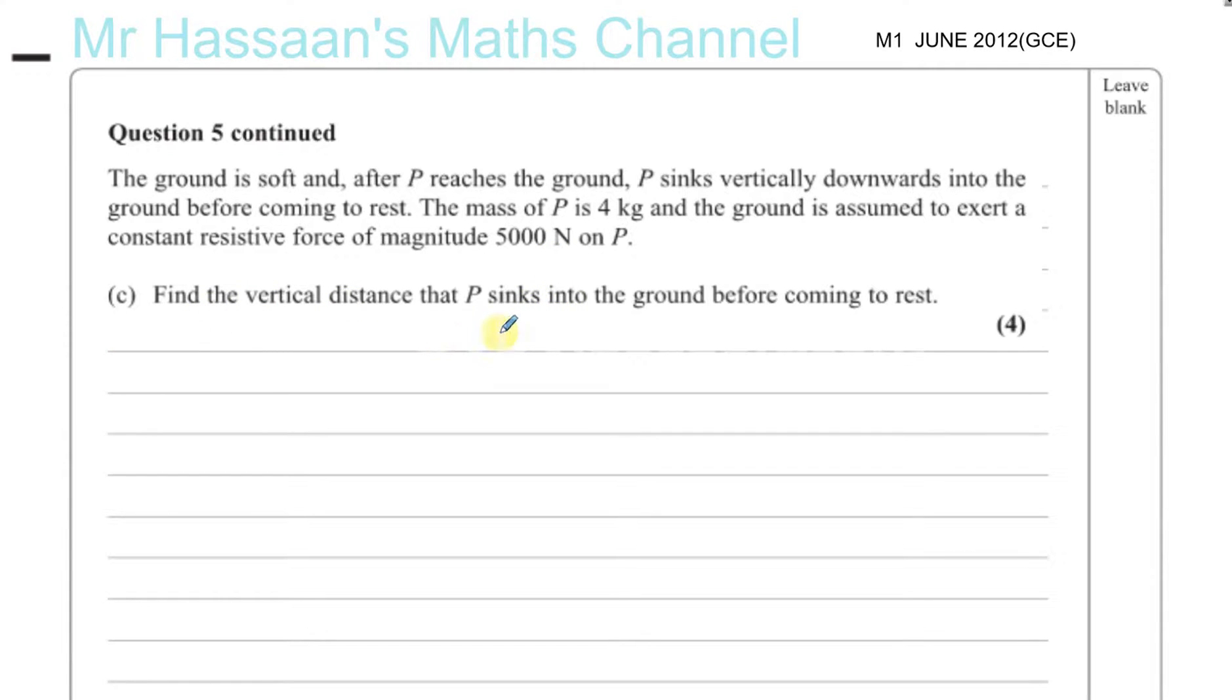Find the vertical distance that P sinks into the ground before coming to rest. So again, just to recap, we had a situation where there was a particle which was projected from 17.5 meters above P. It went up, reached the top of its flight, came down, and it hit the ground.